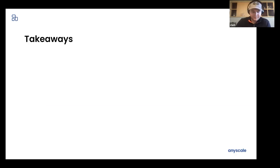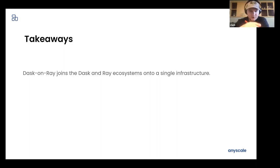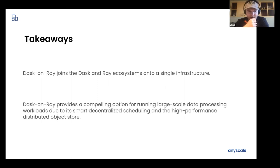So the big takeaways from this talk are that Dask on Ray joins the Dask and Ray ecosystems under a single infrastructure. And I think that this can potentially be a very happy marriage with the data processing capabilities of Dask and the machine learning stuff within Ray. I think this is an awesome way to have a single shared infrastructure, a shared substrate for the entire machine learning pipeline. That's the eventual goal. And then also Dask on Ray by itself provides a pretty compelling option for running large scale data processing workloads due to its very smart decentralized scheduling and the high performance distributed object store. And this second point, well really both points, will continue to get more compelling as the ecosystems of both Dask and Ray grow. And also as we continue to improve how smart that decentralized scheduling is and the performance of the object store, which we're always working on.